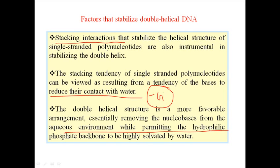Another way ΔG becomes negative is that in the core region of DNA, base pairs from two different strands come together at very tiny distances, with no water molecules present — all water is excluded. When the bases come closer, water molecules are released, which increases entropy, and increasing entropy is always favored in biological systems.